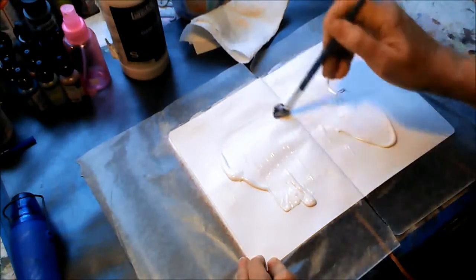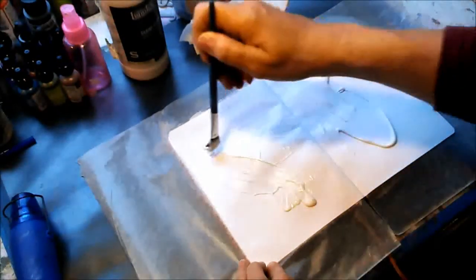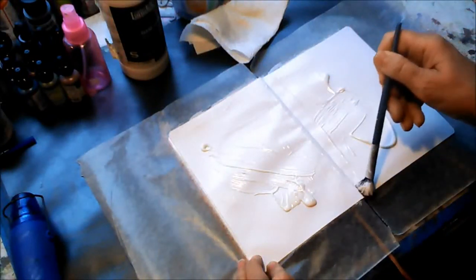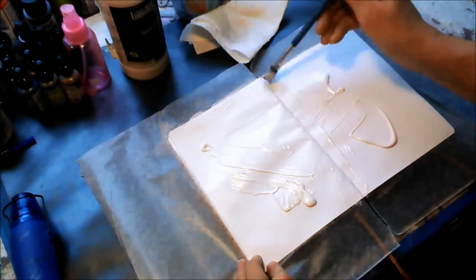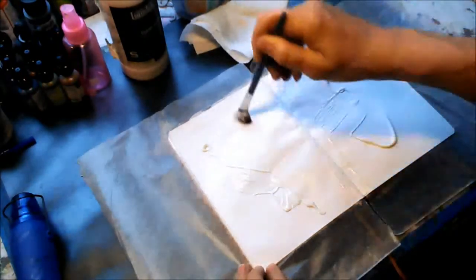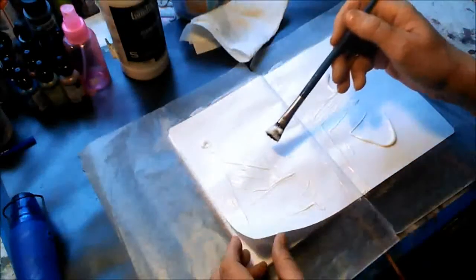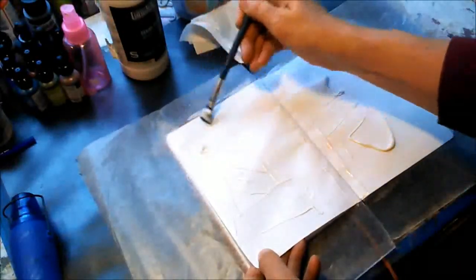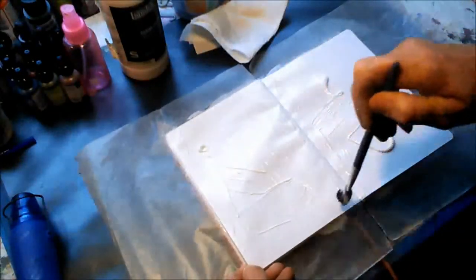I do find that even after I gesso, if I use wet media on my pages, the ink will tend to soak through. So you want to get that area in there pretty good, as good as you can. You also want to get clear out to the border of the pages.